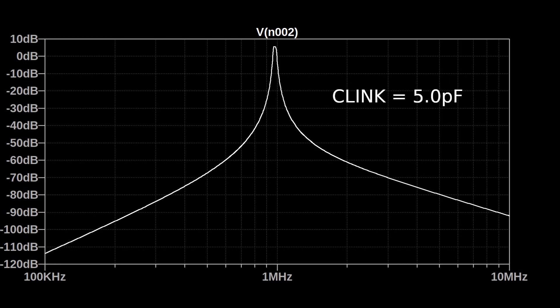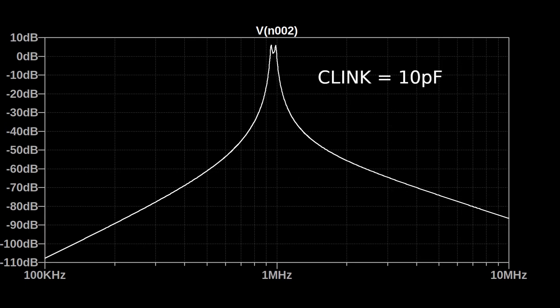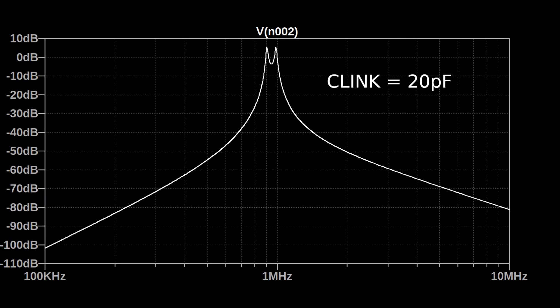At 5 picofarads of linking capacitor, we can see that the peak has started to flatten out. At 10 picofarads, we're starting to see a broad peak with a bit of a notch in it. At 20 picofarads, this notch becomes quite deep, and the peak is quite wide, and this crystal radio will now be very poor on its selectivity.